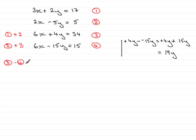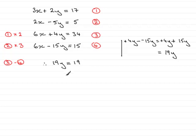So by subtracting the two equations, the x's have gone and the y terms give us 19y. Therefore we have 19y equals 34 take away 15, which leaves 19. Dividing both sides by 19 leaves me with y equals 1.